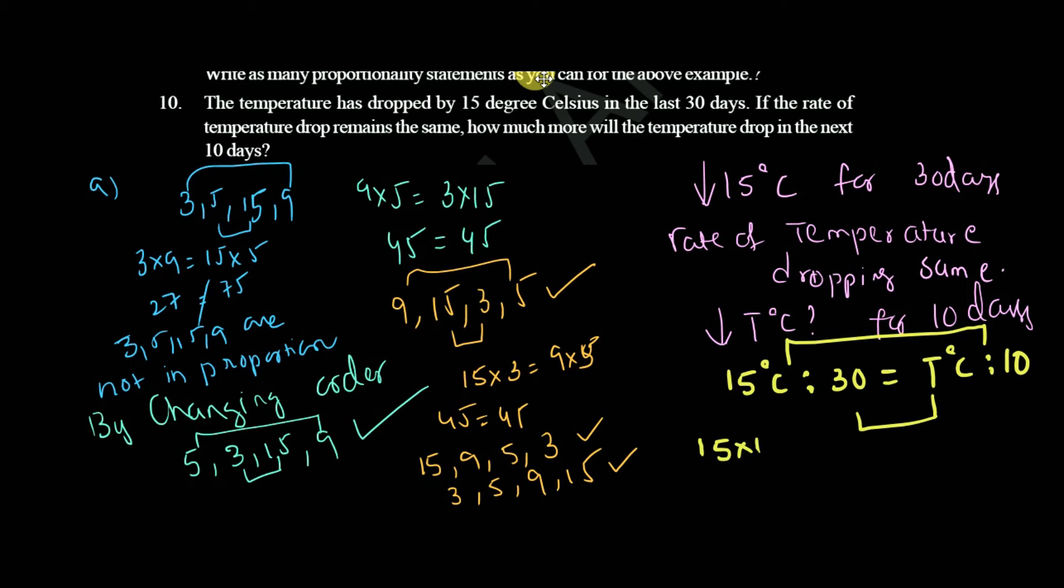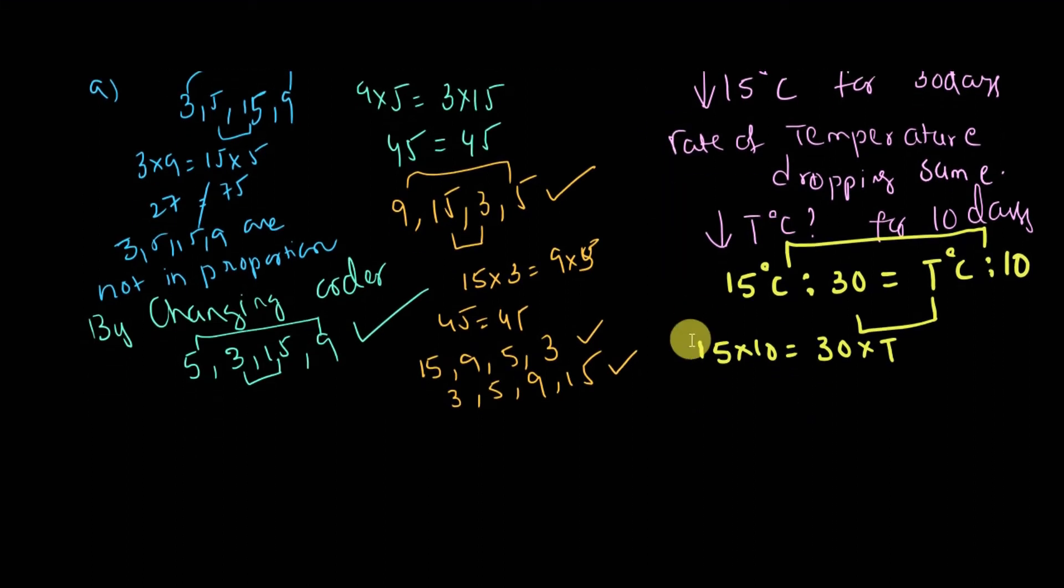So 15 into 10 will be equal to 30 into T. So find this one solution. Then we will get the answer. So 15 times 10 is 150, equals 30T.